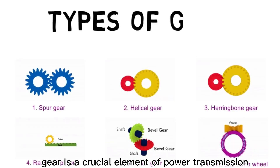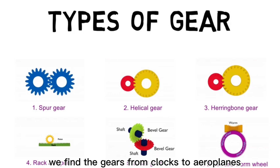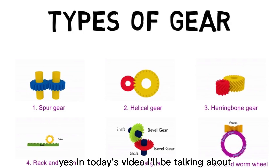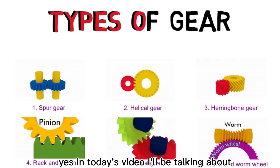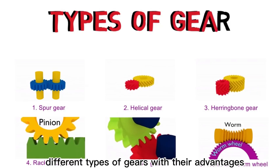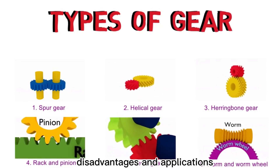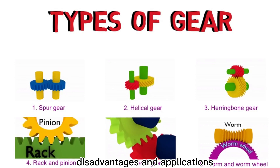Gear is a crucial element of power transmission. We find gears from clocks to aeroplanes. In today's video, I will be talking about different types of gears with their advantages, disadvantages and applications.